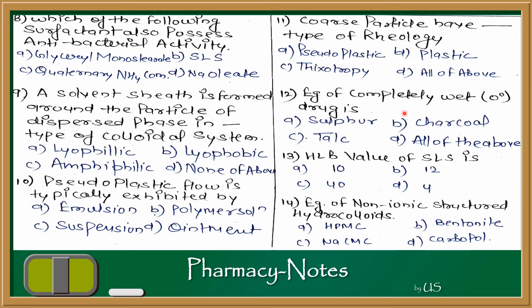They have all of the above. Coarse particles have all types of rheology. Question number 12 is about zero degree contact angle. The answer is C. Question number 13 is HLB value of SLS. What is SLS's Hydrophilic-Lipophilic Balance? If we talk about SLS, we know that it is hydrophilic nature. It means high on the scale - 40. It works as an extremely hydrophilic surfactant.